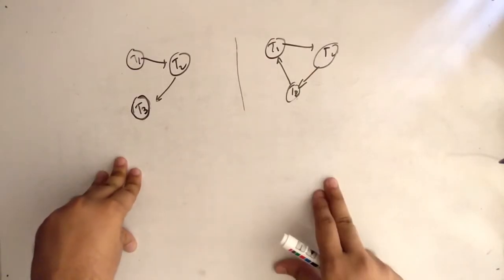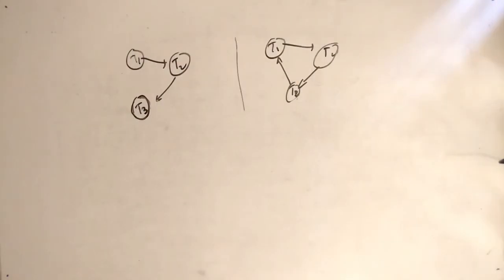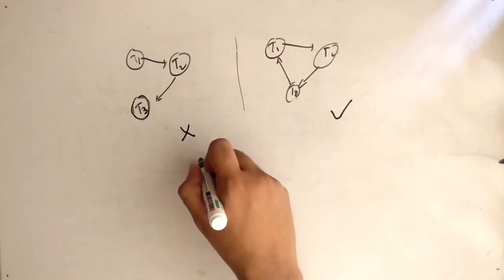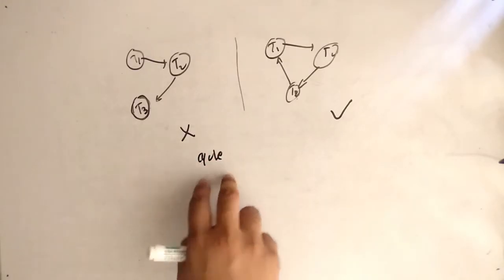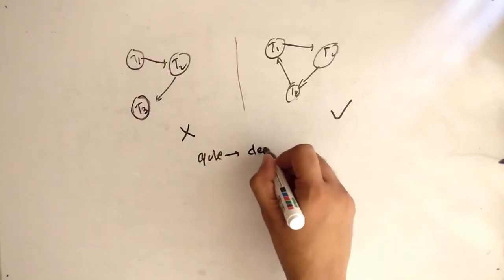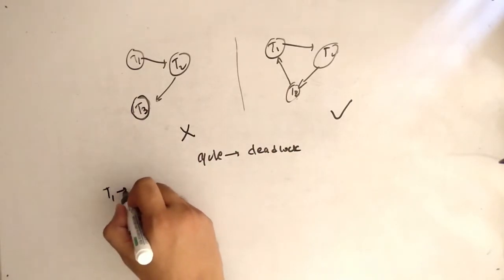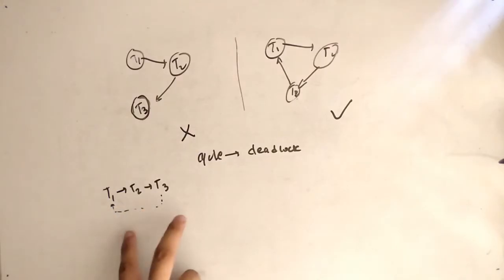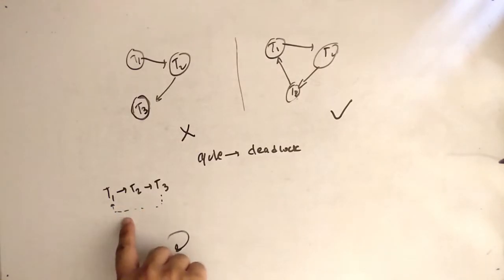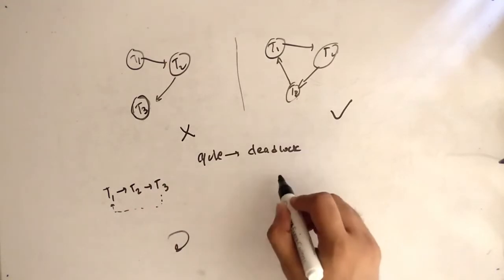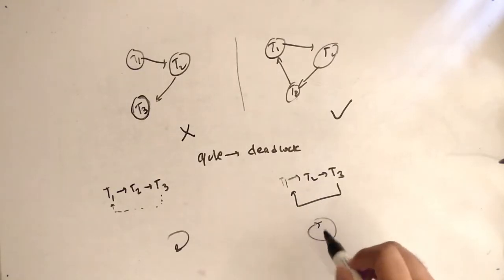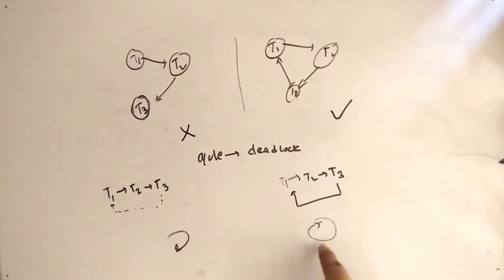Which graph is in deadlock — this one or this one? The answer is: this one is not in deadlock, this one is in deadlock. Why? Because the condition says if a cycle is present, the system is in deadlock. Here you can see T1 to T2, T2 to T3, but we don't have T3 to T1 to complete the cycle, so this is not a complete cycle. In the second graph, T1 to T2, T2 to T3, and T3 to T1 again — there is a complete cycle.